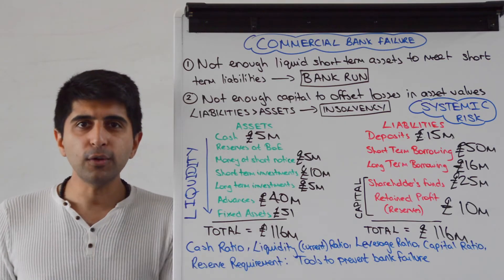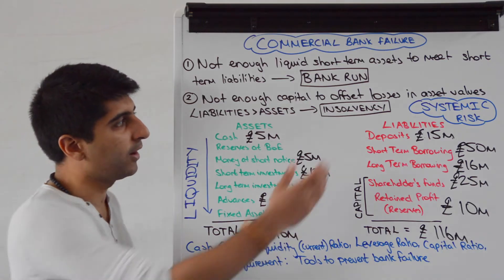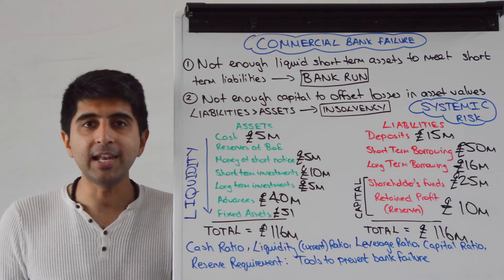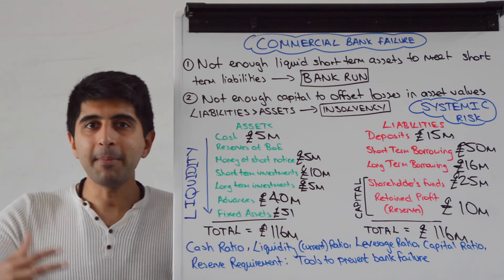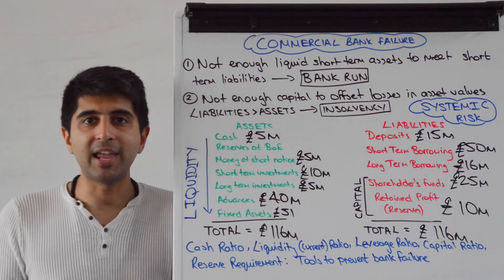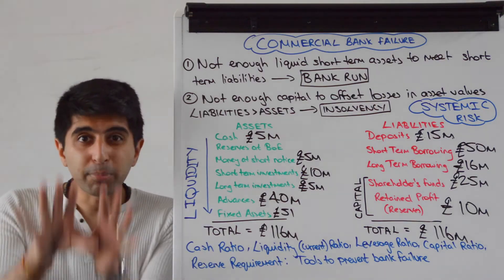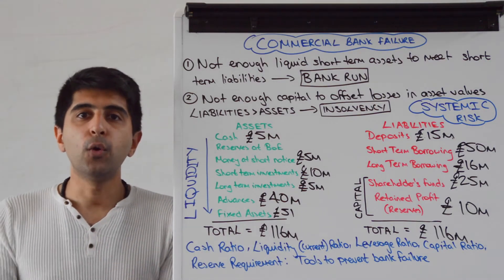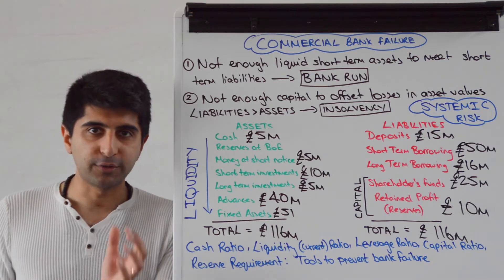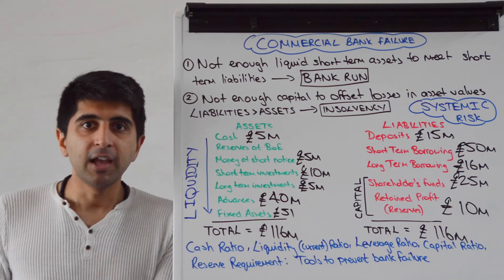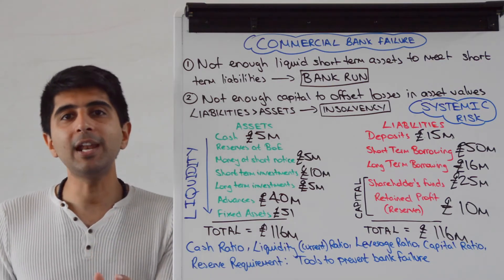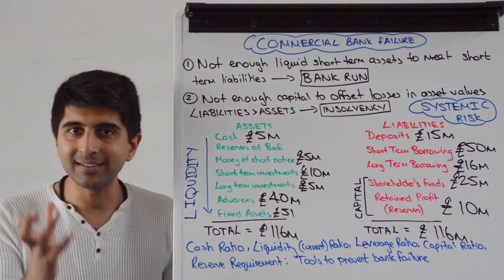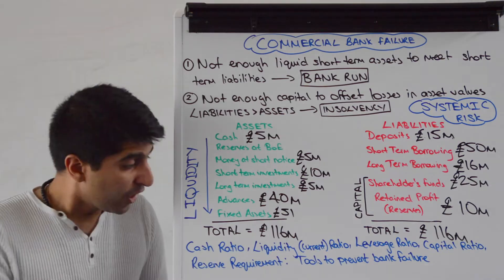That's known as systemic risk, where one commercial bank failure can lead to many other banks failing, which can then bring down the entire financial sector — i.e. what happened in 2008. There are tools available, though, which can help prevent that. Let's understand those.